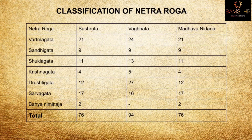Classification of netraruga according to different acharyas: the netrarugas are classified as vartma gatha, sandi gatha, shukla gatha, krishna gatha, drishti gatha, and sarva gatha. Acharya Sushruta and Madha Nidana have also told bahya nimitaja. In total, we have considered 76 netrarugas in general.